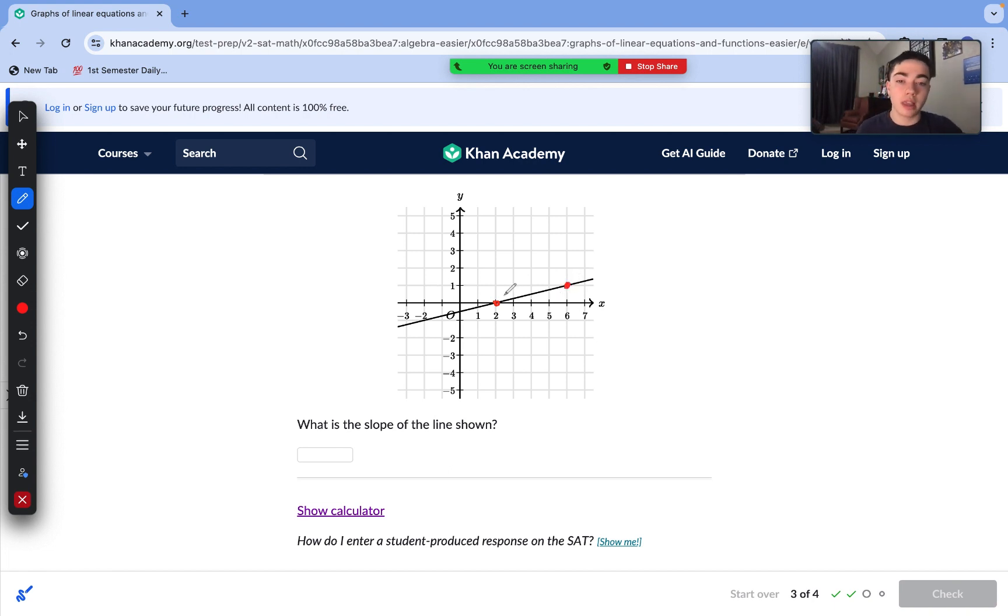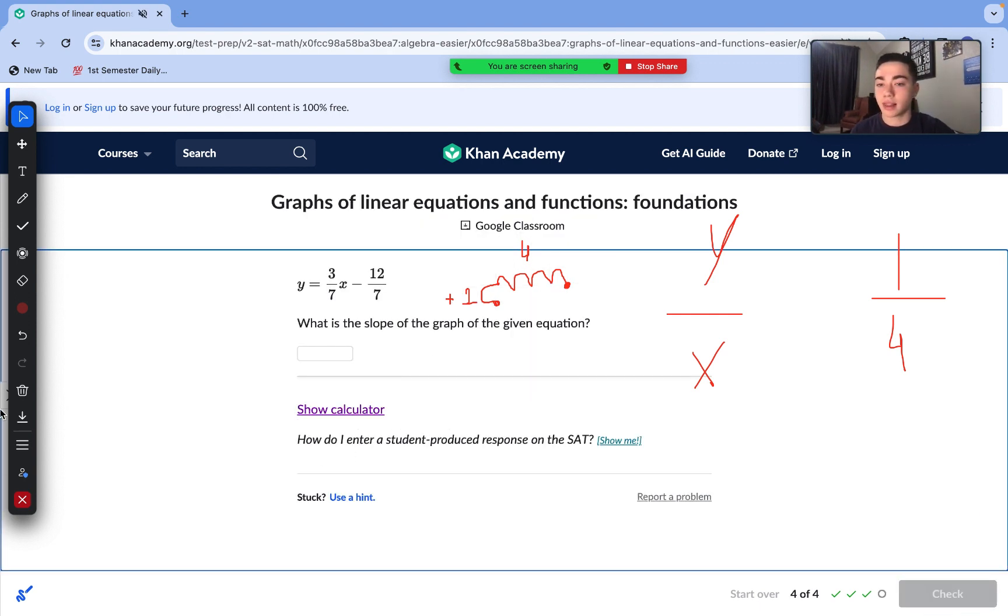So, now, we just need to do rise. We rise one value plus one. And then, we run one, two, three, four values. Just given from our slope formula before, we see the y was over the x. That stays true here. Y over x. So, now, we take our y value or vertical change, our 1. And we put it over our x value, 4. And then, we have our slope, 1 over 4. That is the slope of this line.